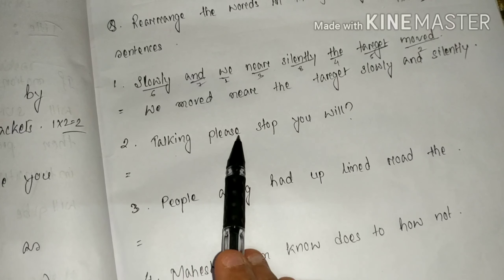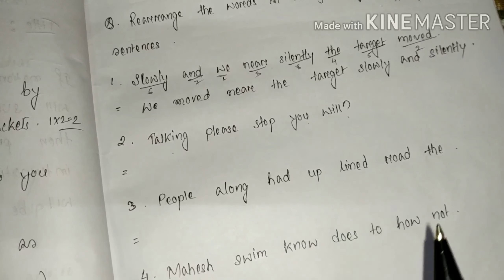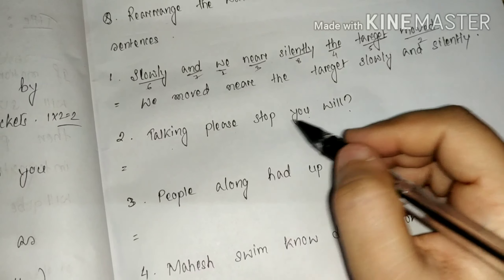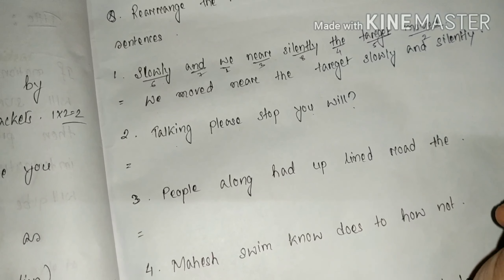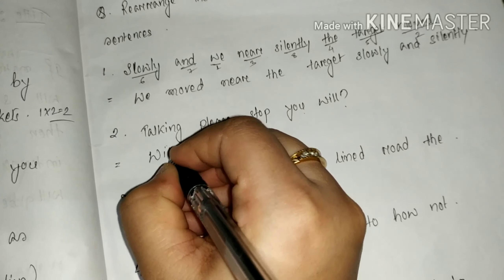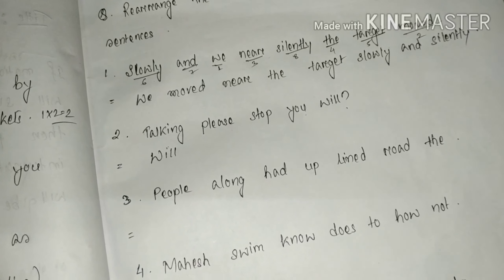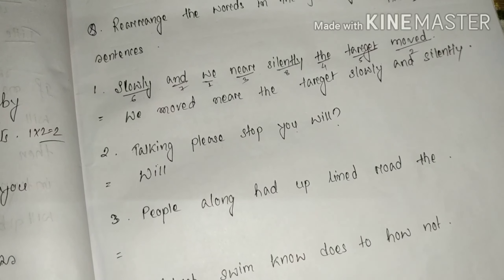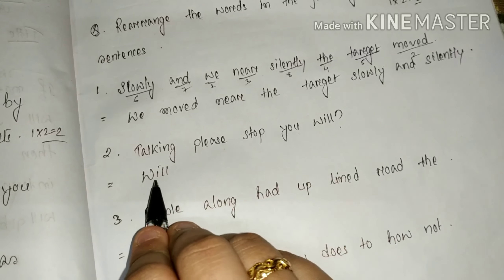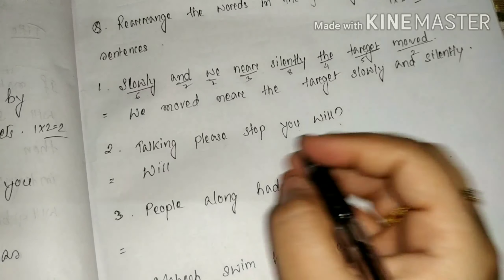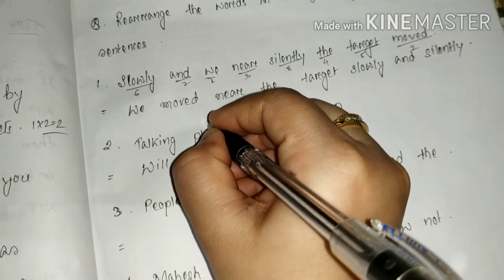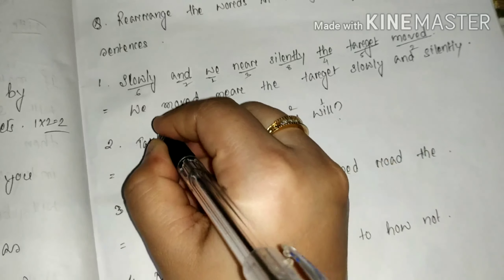Here the words are: talking, please, stop, you, will — with a question mark. That means we have to make an interrogative sentence. What will we do? We bring 'will' to the front. Will you please stop talking? Yes! Will you please stop talking?